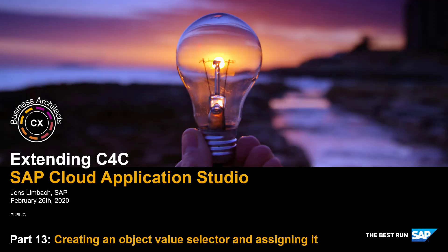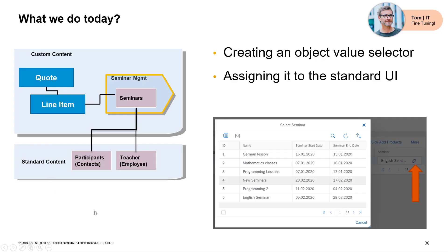In this part we're going to see how you can create an object value selector in order to select a value with a helper and assign it to the standard UI. This directly connects to our previous video where we added an extension field for a seminar on our standard UI as a quote. We don't want to enter a seminar manually — we'd like a selector that provides a nice, searchable list so we can select from our created seminars.